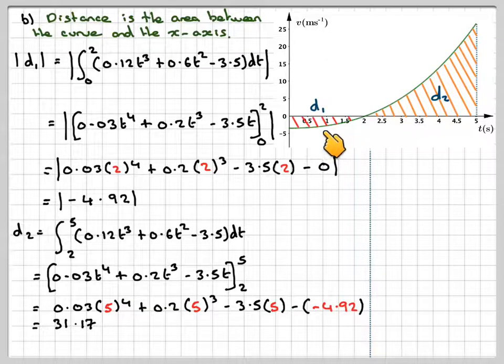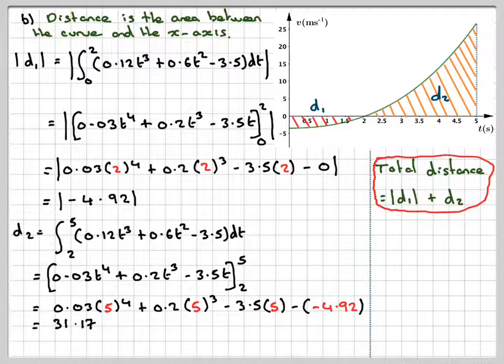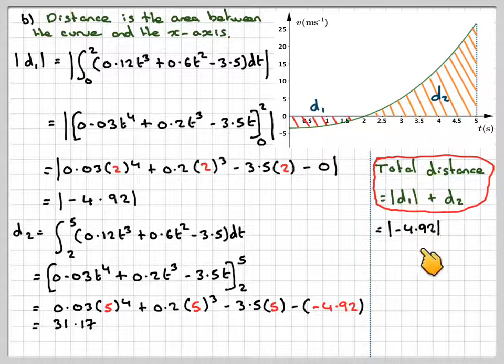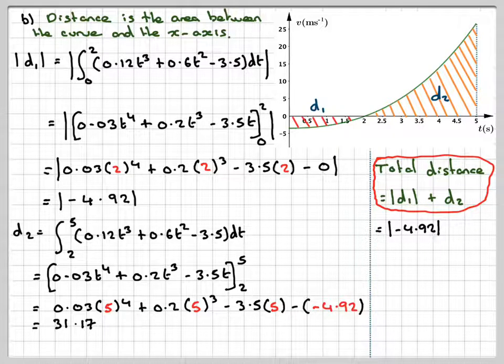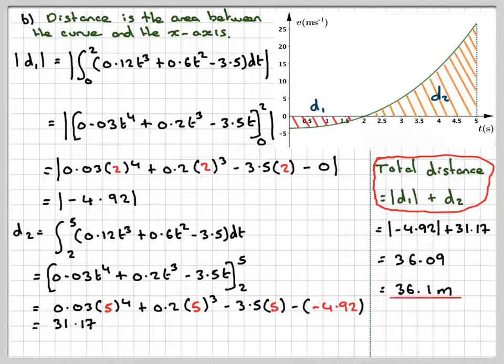So this area here is 4.92, this area here is 31.17, and so in order to find the total distance travelled, we need to add them together. So adding them together, the absolute value of 4.92, or just write down 4.92, or the absolute value of minus 4.92 plus 31.17 will give me an answer 36.09, which is 36.1 metres to three significant figures.